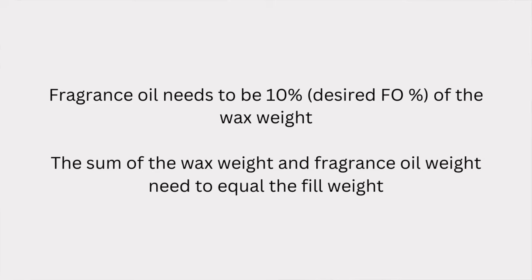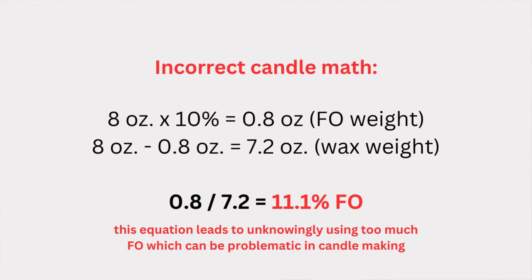But the reason this isn't accurate is because it's going off the percentage of the total fill weight, not the percentage of the wax weight. The key difference is that you're looking for two numbers where the fragrance oil is 10% of the wax weight, and both together equal the fill weight. You can check this by dividing the fragrance oil by the wax weight. If you divide 0.8 ounces by 7.2 ounces, you get 11.1% fragrance oil — not the 10% you wanted.